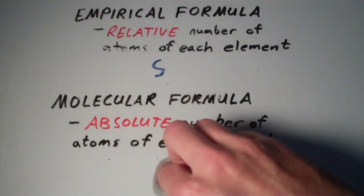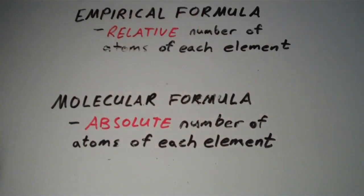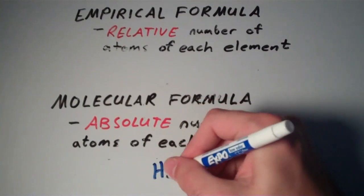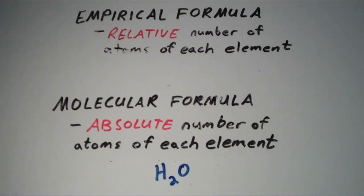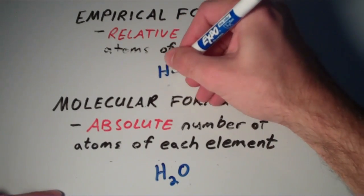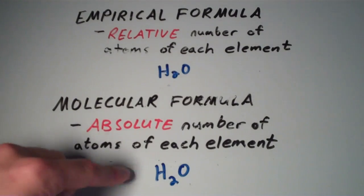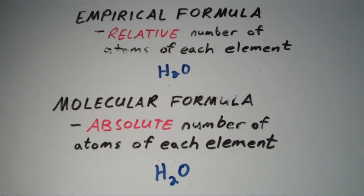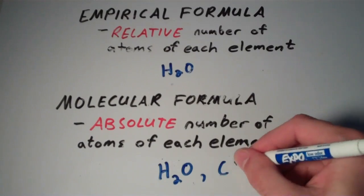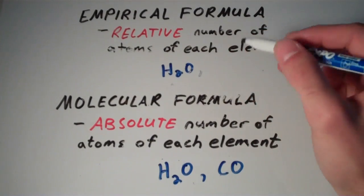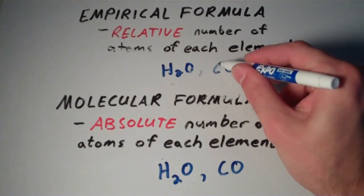There are certain cases where the empirical formula and the molecular formula are identical. For example, water — the empirical formula for water is also H2O, since there's no way to reduce it to any other whole number ratio of atoms. Also carbon monoxide, CO, is another compound where the empirical formula is the same as the molecular formula.